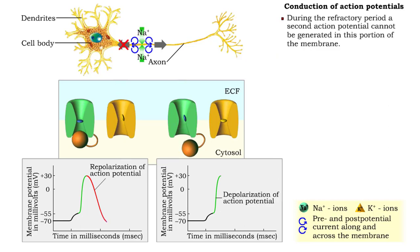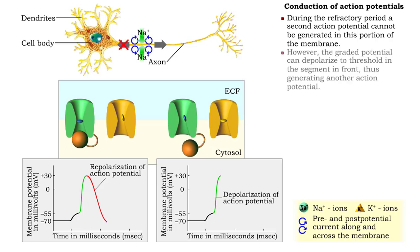The graded potential is unable to reach threshold and generate another action potential in the section of the membrane that is refractory. The nervous impulse is conducted along the membrane to the next segment as the graded potential there reaches threshold and self-propagates the action potential again.